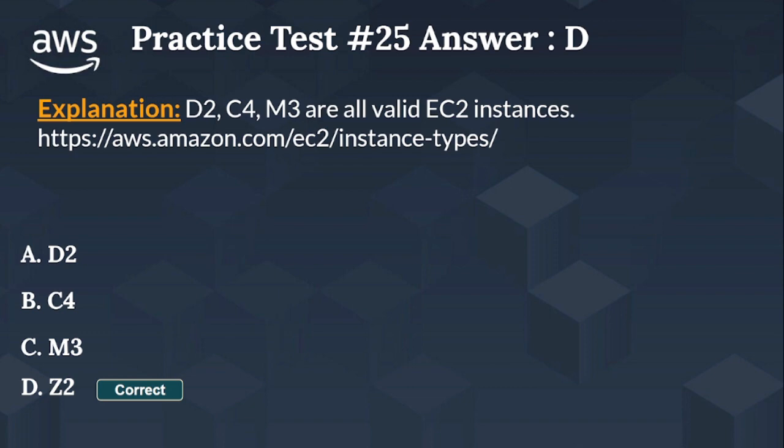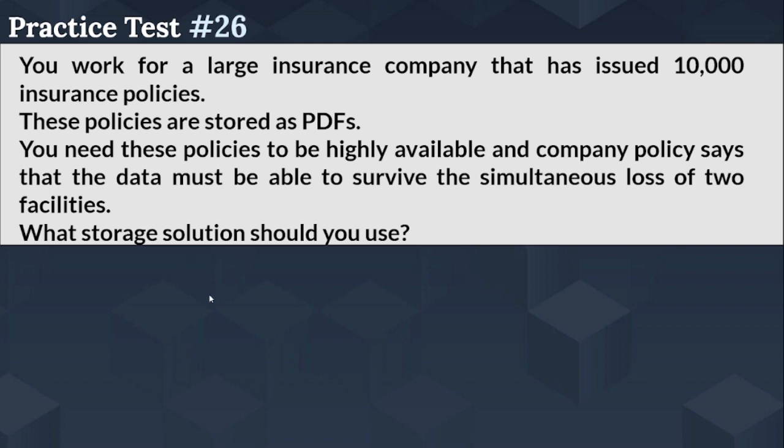The right answer is Option D. D2, C4, and M3 are all valid EC2 instances, but Z2 is not. Let's move on to the next question for the AWS Solution Architect Associate exam.